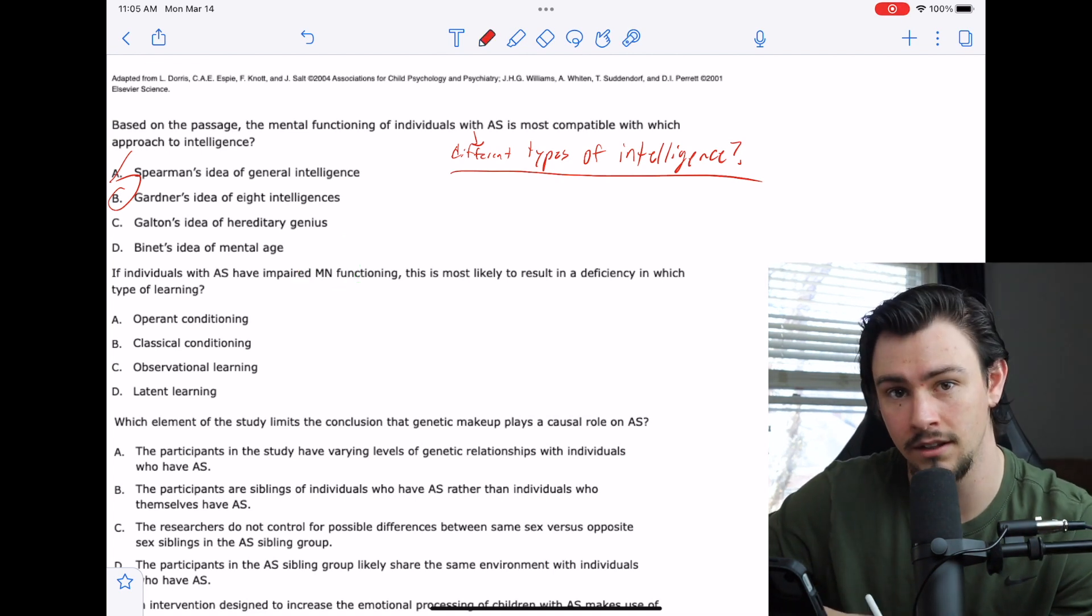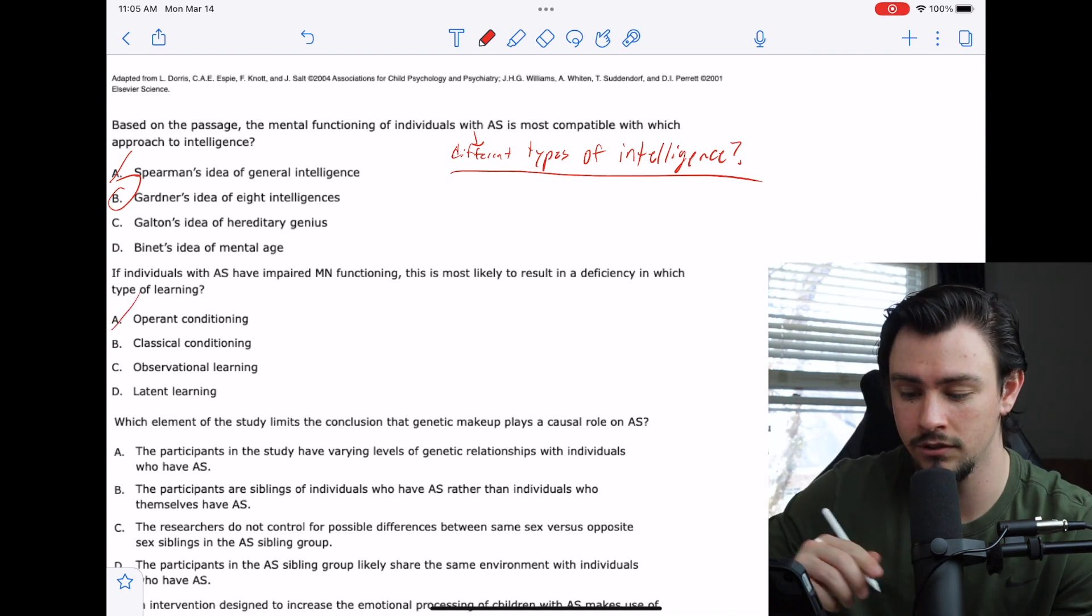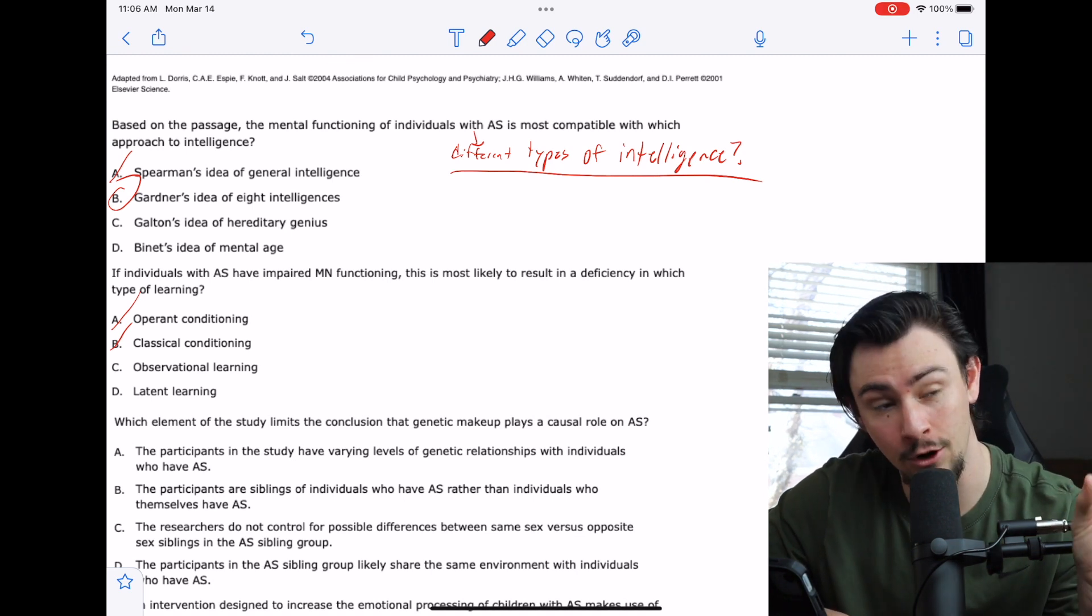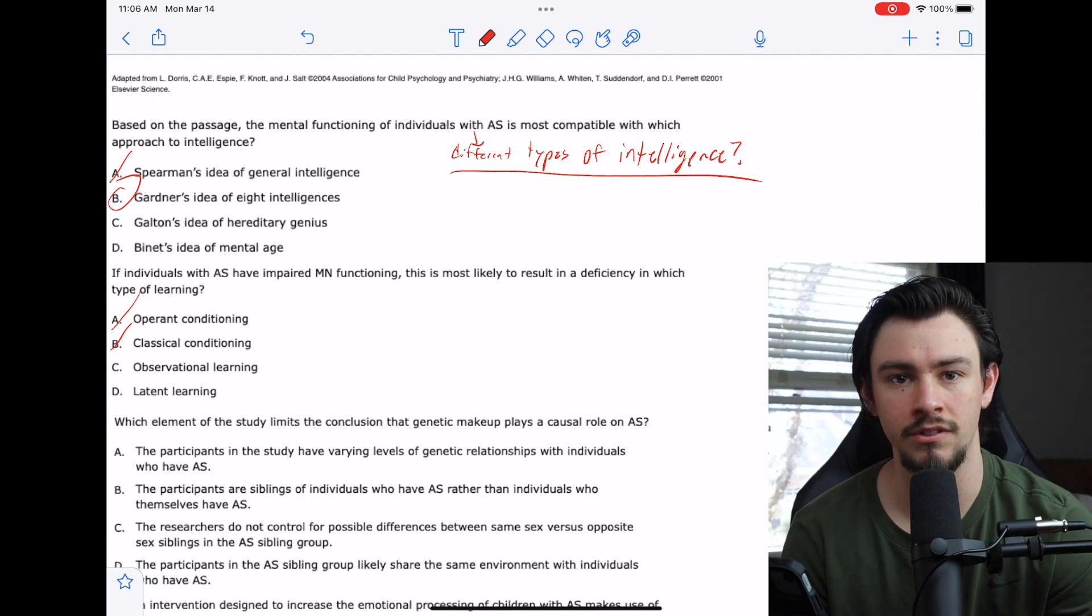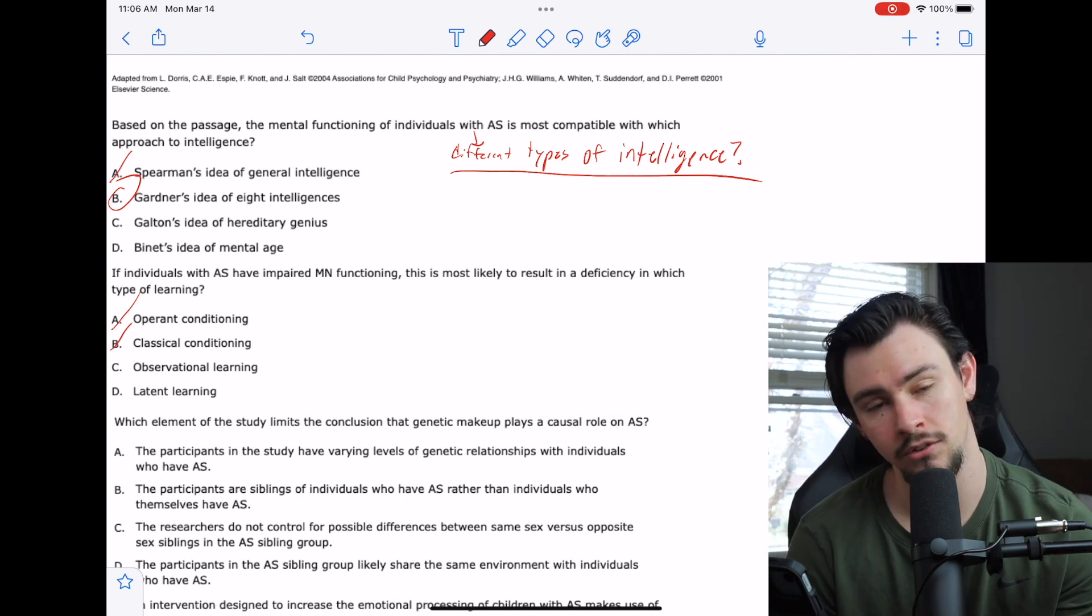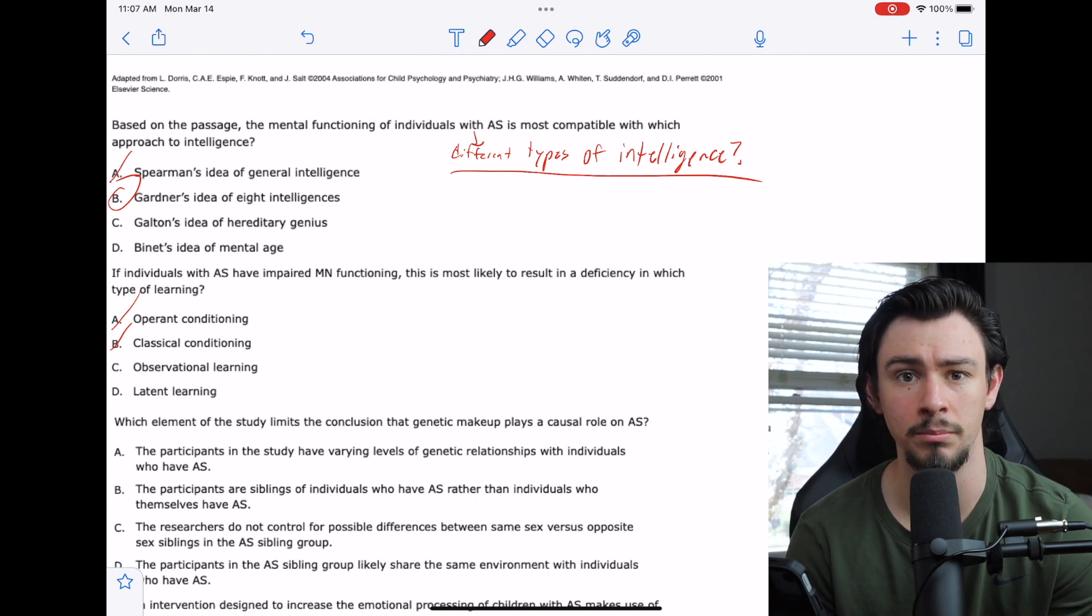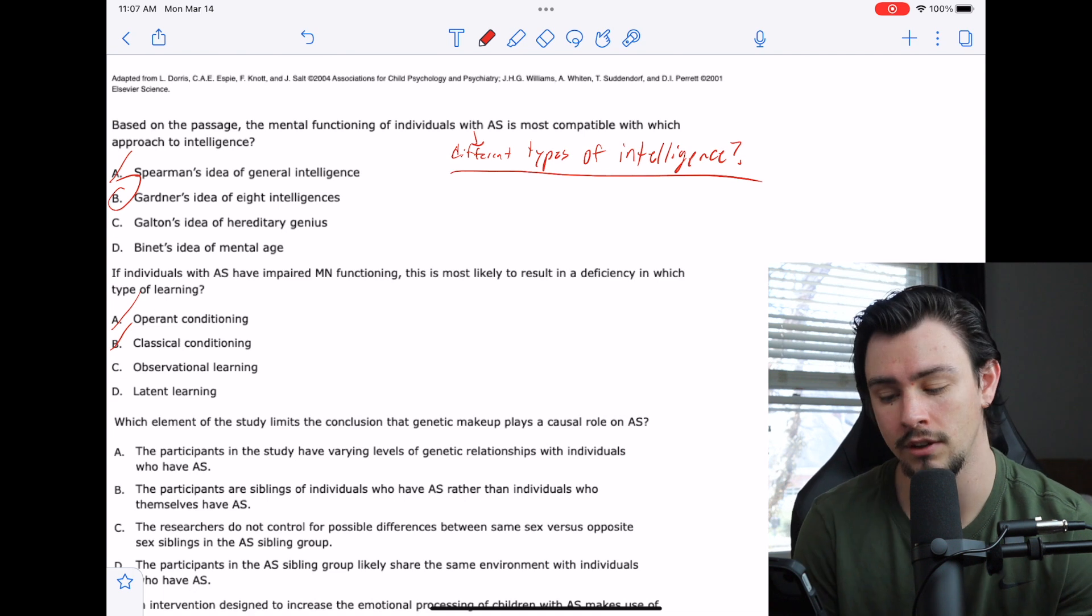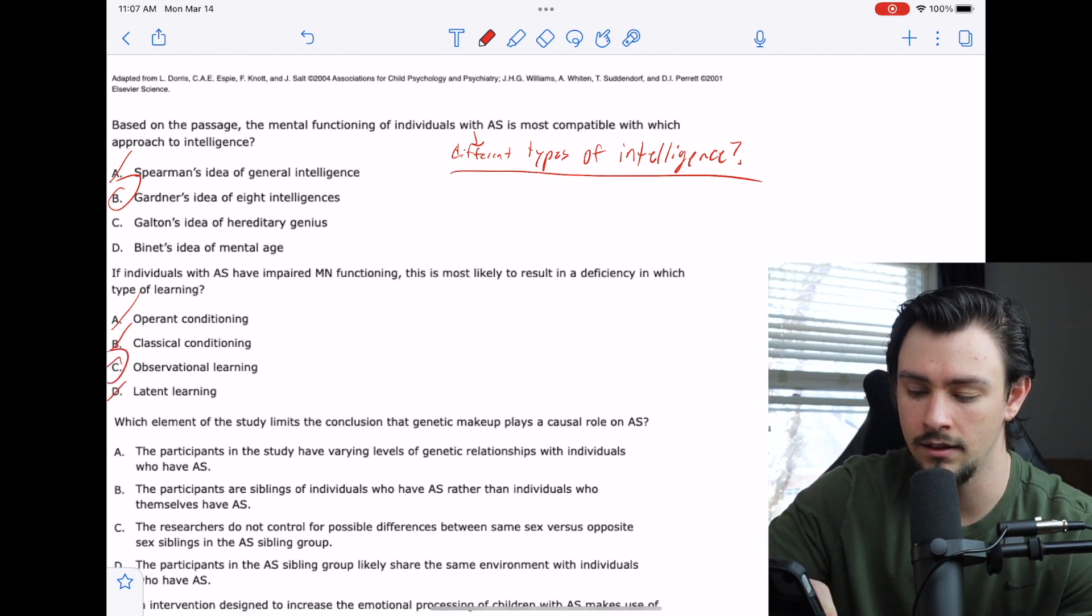A, operant conditioning. That's the idea of providing rewards or punishments generally, so maybe not A. B, classical conditioning. That's like Pavlov's dog, so maybe not B. C is observational learning. That's when I watch somebody do something, I observe them do it, and then I learn how to do that task. So I like C. And then D is latent learning, which is this idea of only being aware that you've learned something when you've been asked to produce it. I used to ride the bus home from school every day, and I learned where a lot of people lived. That's observational learning, which would be the correct answer here.